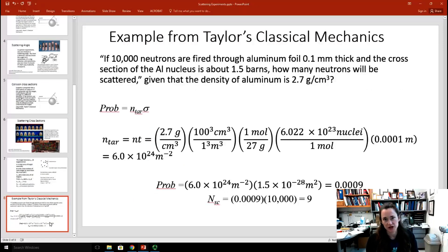Let me do an example from Taylor's Classical Mechanics, which is a great resource, by the way, for understanding scattering. If 10,000 neutrons are fired through an aluminum foil that's 0.1 millimeter thick and the cross section of the aluminum nucleus is about 1.5 barns, then how many neutrons are going to be scattered, given that the density of your aluminum is 2.7 grams per cubic centimeter?